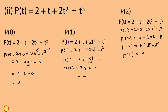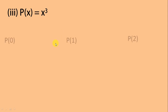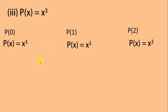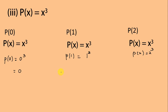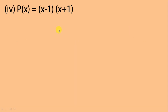Let's go to the third part. First we write what we have to find, then we write our polynomial. The third step is replacing x with 0, 1, and 2 respectively. So p(0) = 0³ = 0, p(1) = 1³ = 1, and p(2) = 2³ = 8.